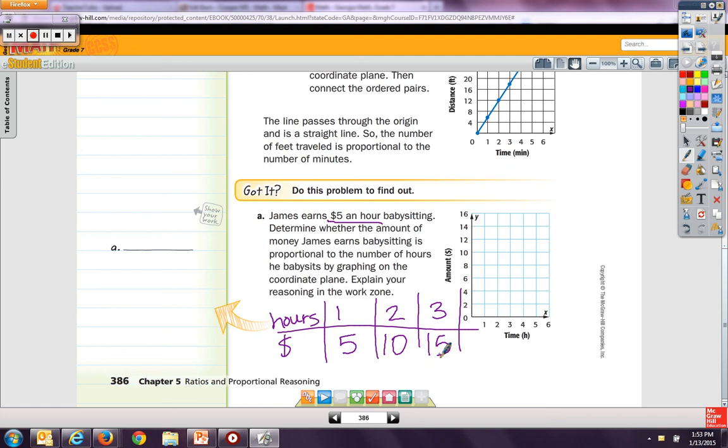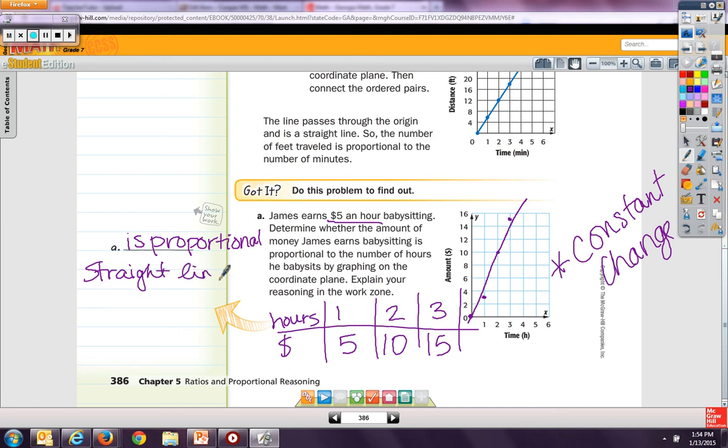So now I go to my coordinate plane and I graph it. And at zero, if he worked zero hours, he would make zero money. At one hour, he would make $5. At two hours, he would make $10. And at three hours, he'd make $15. This does form a straight line. It goes up by a constant change. Again, we hear that constant change. That is what makes things proportional. If there's a constant change. And a straight line shows a constant change. So it is proportional because it's straight line through the origin.